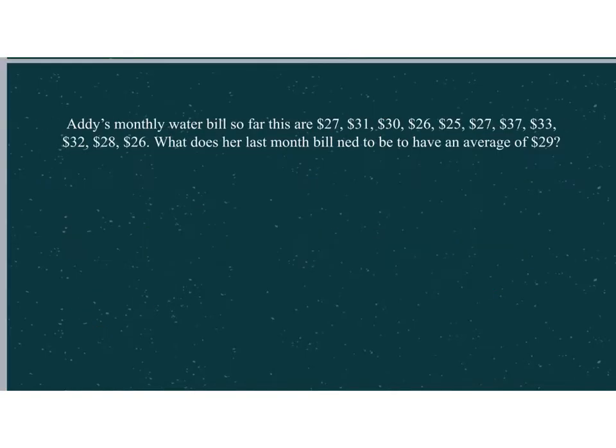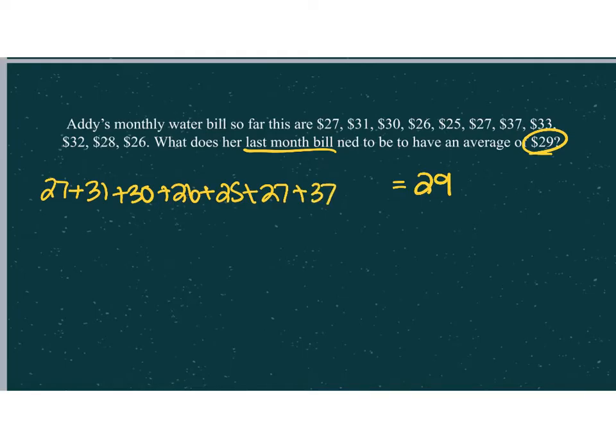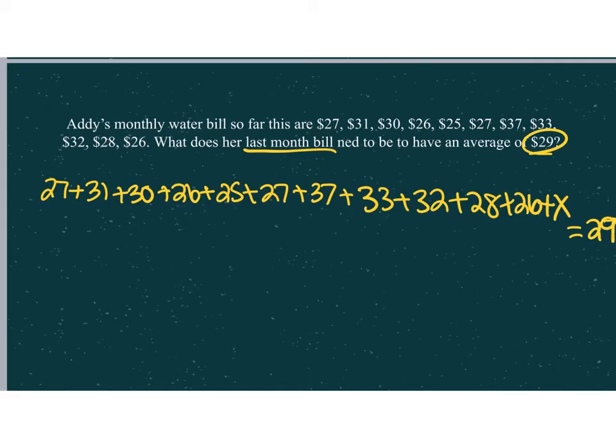Let's take a look at the next problem. It says Addie's monthly water bills so far are $27, $31, $30, $26, $25, $27, $37, $33, $32, $28, and $26. What does her last month bill need to be to have an average of $29? So that is the average. What we need to do is add all of these numbers up. And we're going to have an additional value that we don't know. And we want that to be equal to 29.